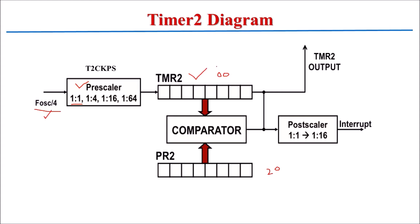When we start this timer, the TMR2 value is incremented by 1 after each clock cycle. After the first clock cycle it will be 0x01, after the second it will be 0x02, and so on. After 20 clock cycles, this count will reach its final value of 0x20.